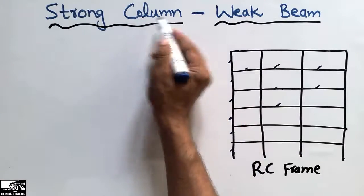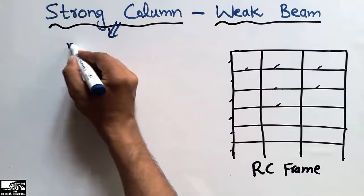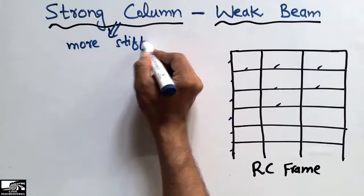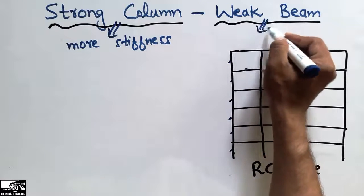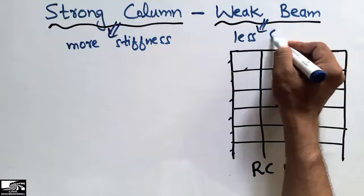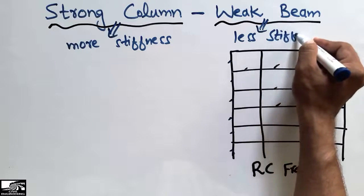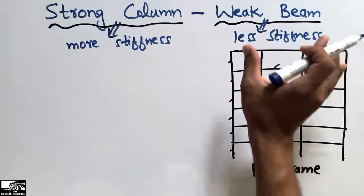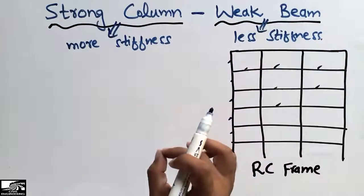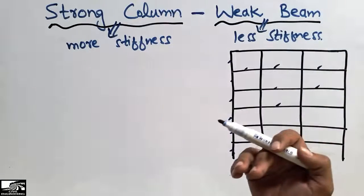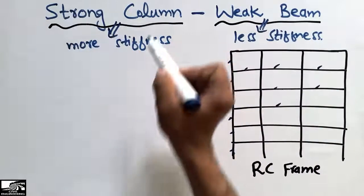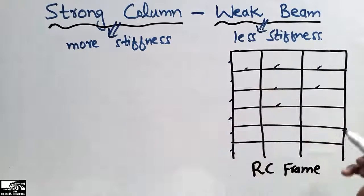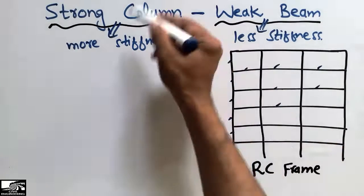This concept says that the strong column means your column should have more stiffness in comparison to the beam. The column should have more stiffness while the beam should have less stiffness. It doesn't mean that your beam should be weak, but in comparison to the column your beam should be less stiff. Your beam should still be able to resist the effective demand, but the column should be stiffer.